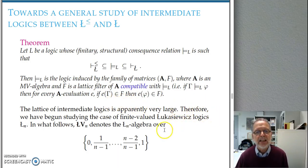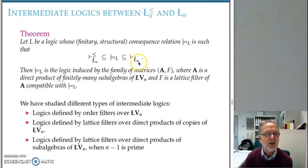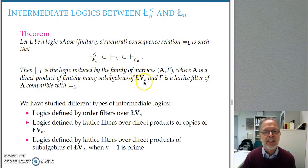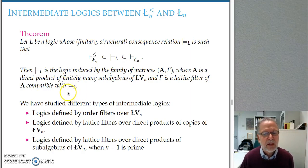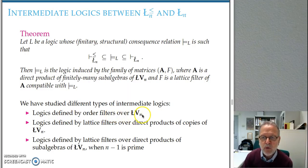We conclude that the intermediate logics in the Lukasiewicz setting form a very large lattice. In particular, we have proved that the depth of this lattice has cardinality of the continuum, and we are nearly sure the width is also the continuum, making a full description very difficult. We therefore decided to study the particular case of finitely valued Lukasiewicz logic, where the corresponding characterization theorem states: a logic is an intermediate logic of the M-valued Lukasiewicz logic if and only if it is induced by a family of matrices (A, F) where A is a direct product of finitely many subalgebras of the M-valued Lukasiewicz chain and F is a lattice filter of A compatible with the logic.